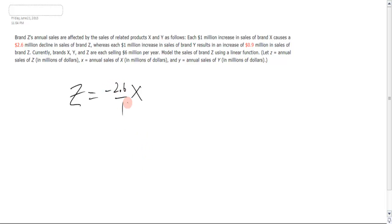So change in output over change in input, or change in dependent variable over change in independent variable, or rise over run, however you want to look at slope, there it is. So you're going down 2.6 in the Z for every increase of 1 in the X, and you have that right.